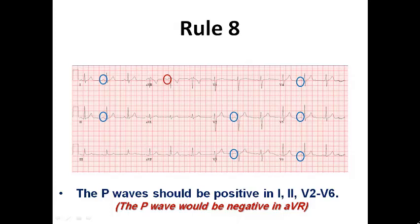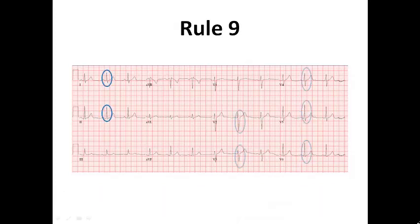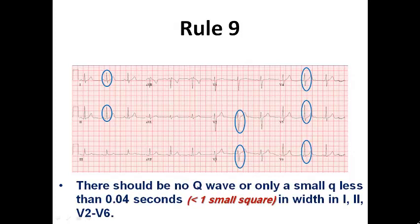Then we come to rule number nine and rule number nine mentions that there should be no Q-wave or sometimes only a small Q-wave less than 0.04 seconds which means that less than one small square duration in lead 1, 2 and from V2 to V6. So usually you should find no Q-waves but you can find initial Q-waves especially in lead V5, V6, 1 and AVL sometimes because they are called the lateral ECG leads.